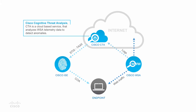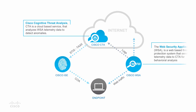Cisco Cognitive Threat Analysis, CTA, is a cloud-based service that analyzes WSA telemetry data in order to detect breaches on the network by automatically detecting command and control channels and other evidence of an active infection, and is able to track individual campaigns and attackers. The Cisco Web Security Appliance, WSA, is a web-based threat protection solution and sends telemetry data to the CTA account for behavior analysis.